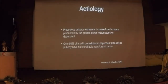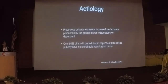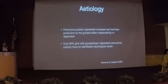Precocious puberty represents increased sex hormone production, either by the gonads — called GnRH-independent — or dependent on GnRH hormones. Over 90% of girls with GnRH-dependent precocious puberty have no identifiable underlying pathology.